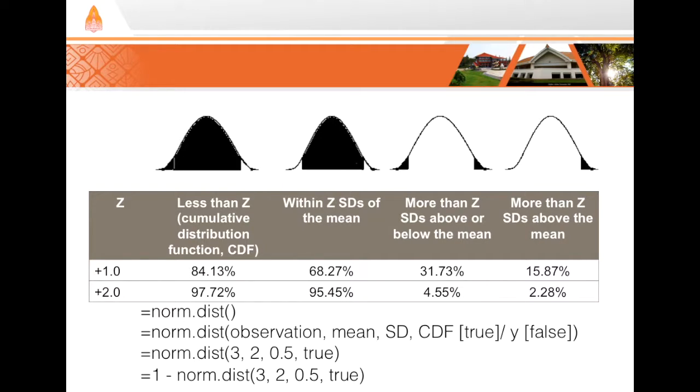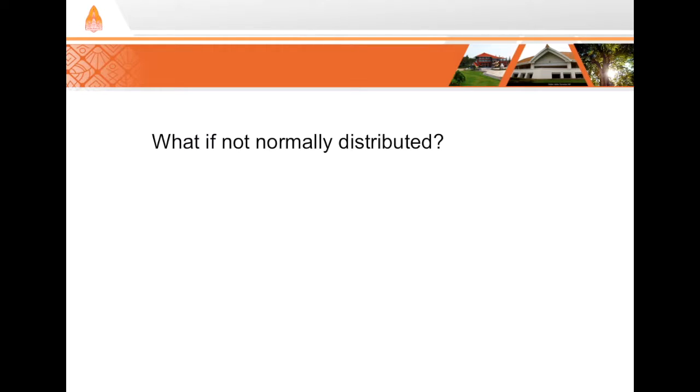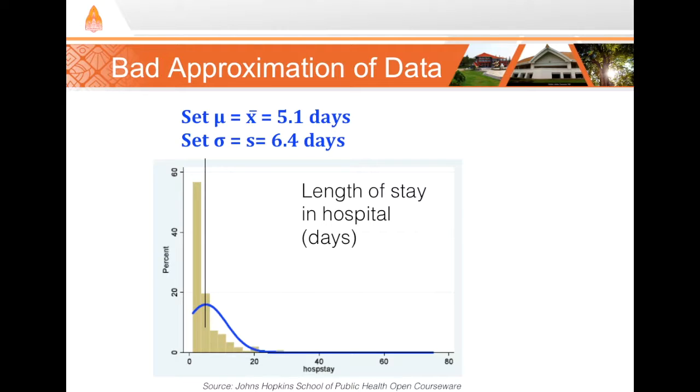But one more thing before I end part A. What do we do if the data is not normally distributed but we still want to know what percentage of our observations we can expect to be above or below a certain value? Remember the length of stay in the hospital histogram. What if I want to know, for example, what percentage of stays are greater than 5 days? Can I calculate the z-score for 5 days and look it up like I did with the blood pressure? No.